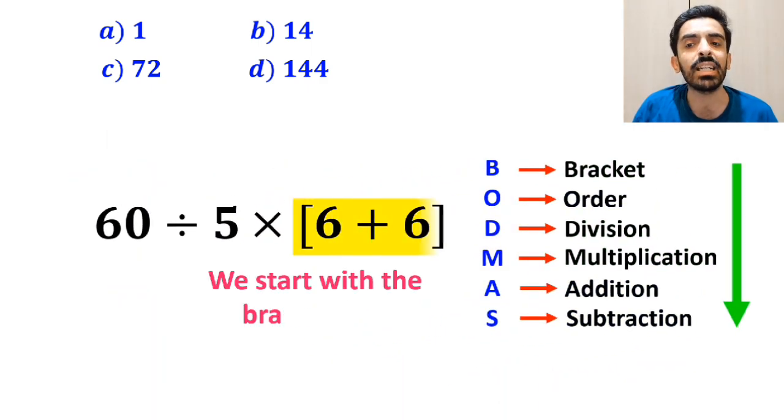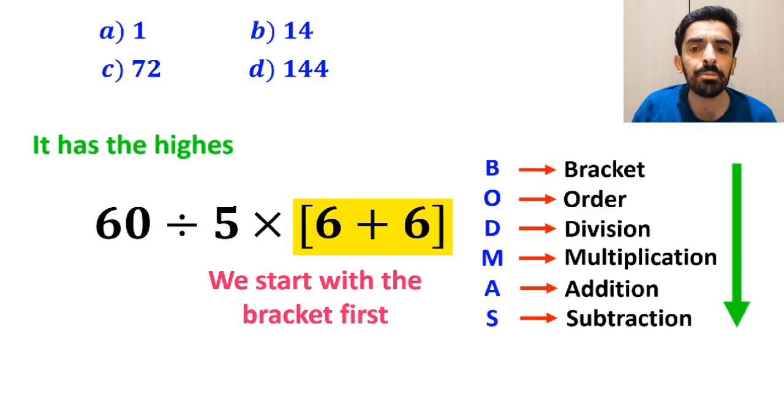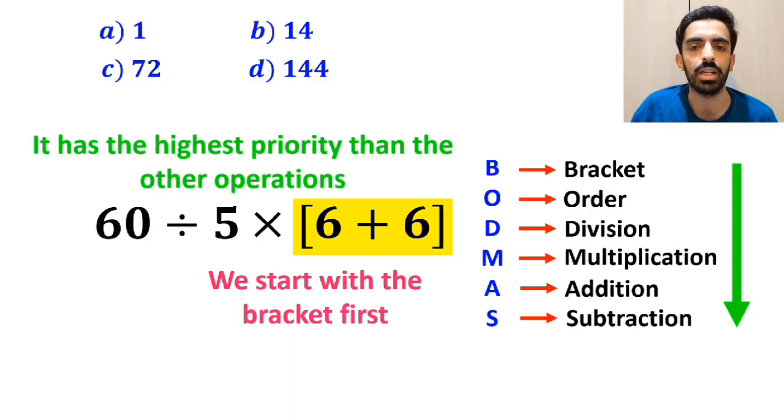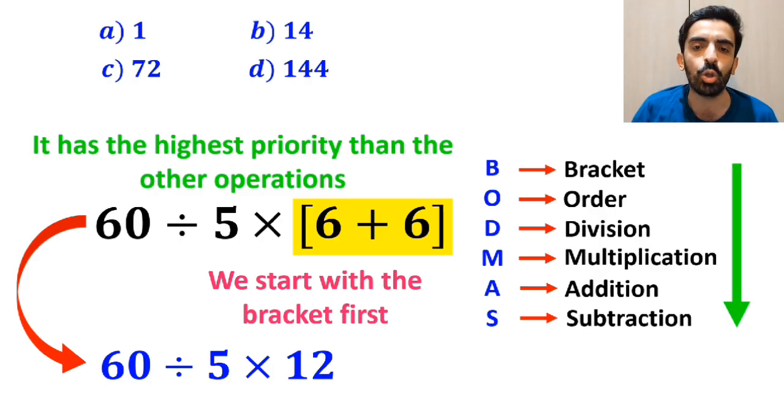So, we'll start with the bracket first, because it has the highest priority than the other operations. This expression simplifies to 60 divided by 5 multiplied by 12.